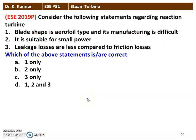The next question from the 2019 question paper — consider the following statements regarding reaction turbine. Blade shape is aerofoil type and its manufacture is difficult. It is suitable for small power. Leakage losses are less than frictional losses. The correct option is statement 1 only — blade shape is aerofoil type and its manufacture is difficult. The other two statements are not correct.